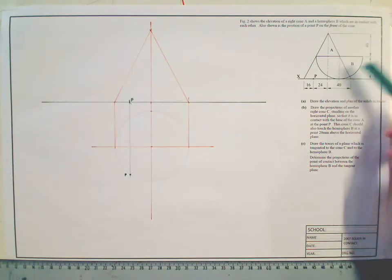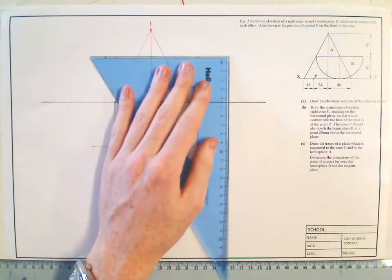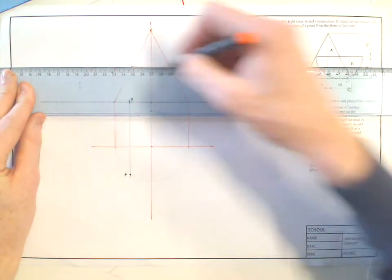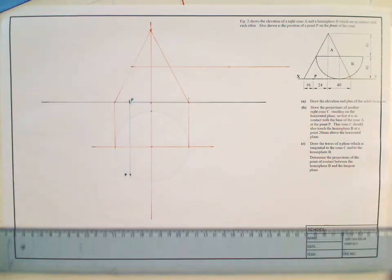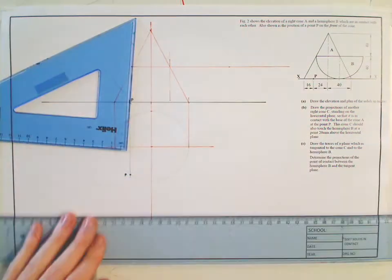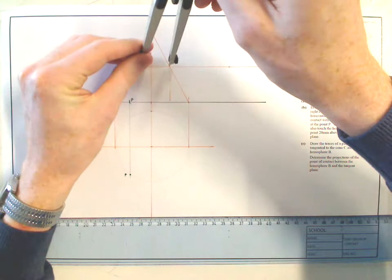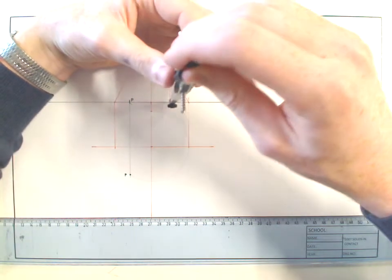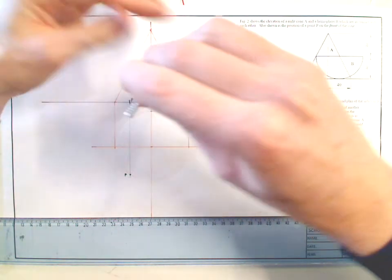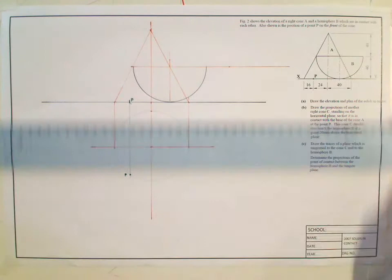And I can also draw in this hemisphere here. So I know it's 40mm height. So I measure 40mm. There is 40mm. And I know the center. The center is drawn from that point there. I'm going to get my compass in and draw in my hemisphere.